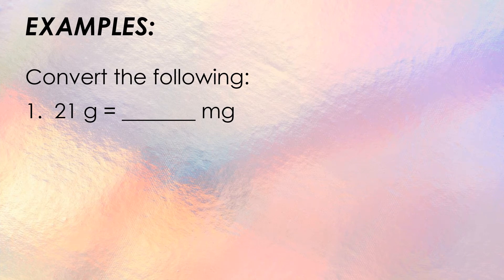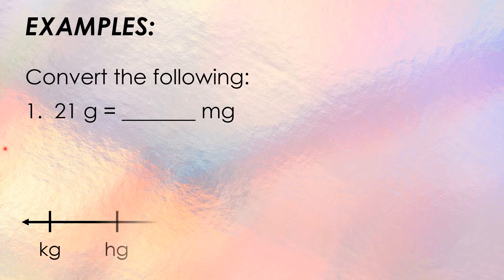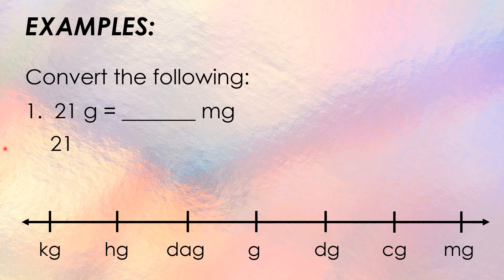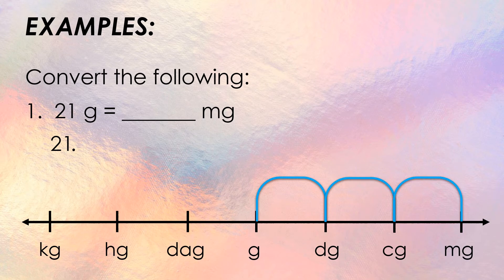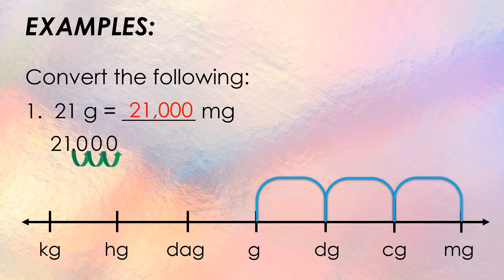Let us now proceed to converting one unit to another. First example: 21 grams is how many milligrams? Using our metric system, write down the given: 21. We need to convert grams to milligrams, moving to the right. Place a decimal point to the right of 21, then move it three places to the right — one, two, three — filling the spaces with zeros. Therefore, 21 grams is equal to 21,000 milligrams.